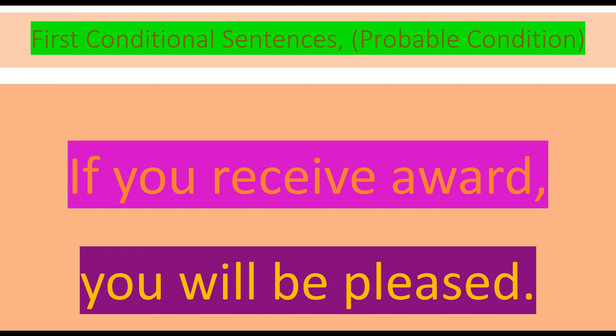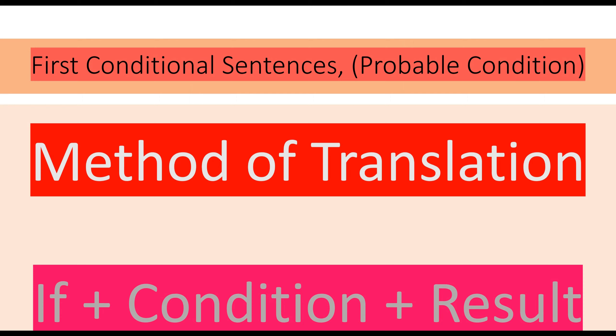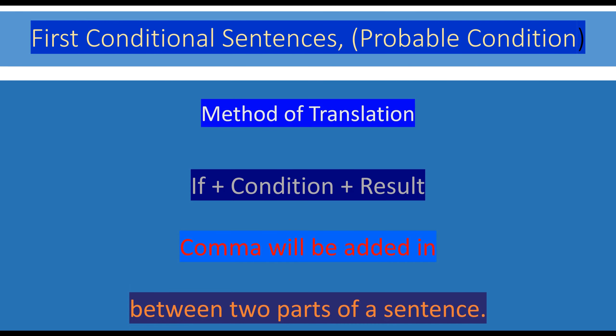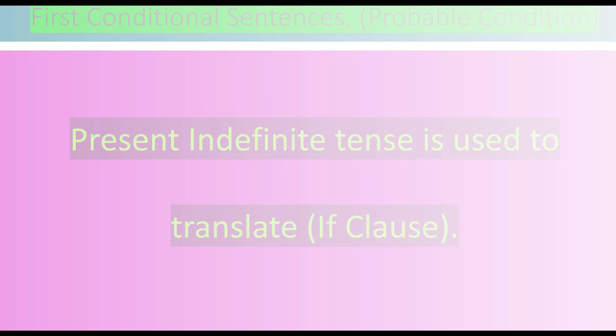'If you receive award, you will be pleased.' This is the method to translate this type of sentence: 'if' is written first, then the condition is mentioned, and then the result is mentioned — if + condition + result. Comma will be added between two parts of the sentence. If we are writing a consequence or result in the first part, then no comma will be placed between the two parts. This is an important point.